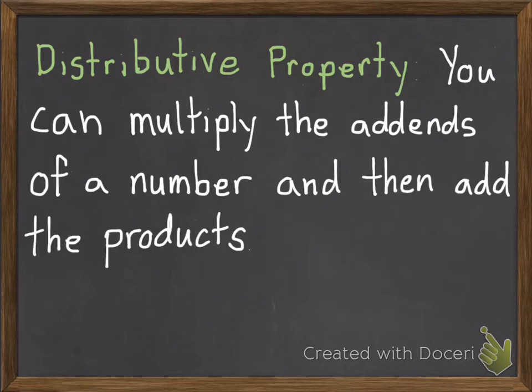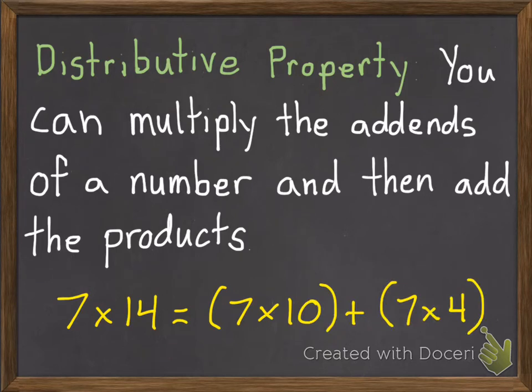And basically we've been doing this for a week now. So an example of this is if we have 7 times 14, we can break the 14 apart or decompose it into 10 and 4. And we can multiply the 7 times the 10 and the 7 times the 4 and then add those products together.